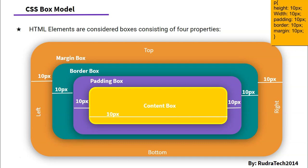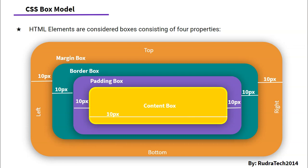This is due to the calculation of the content box and the edges of each of the remaining boxes. This is what the box model looks like. Each and every HTML element is divided into smaller boxes consisting of content, padding, border, and margin.